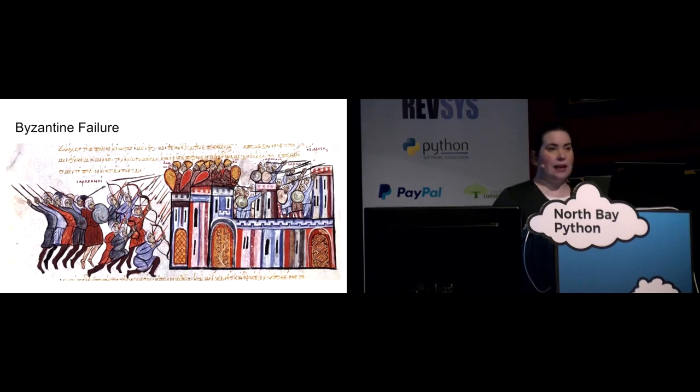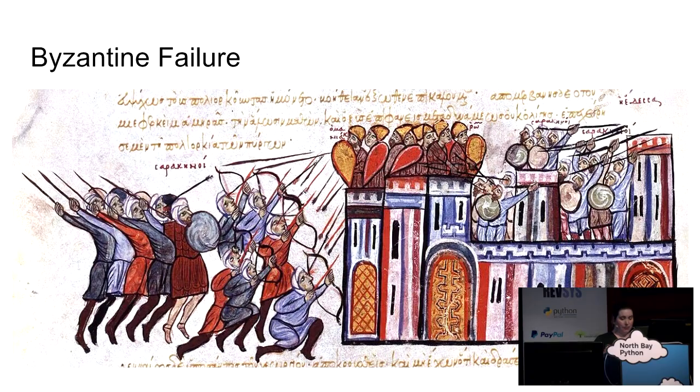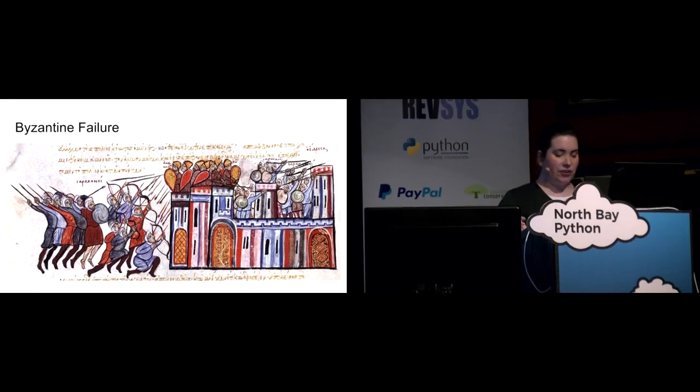Now the Byzantine failure was named for a paper in which nine Byzantine generals are surrounding the city. They can only take the city if they all decide to attack at once. The messengers between them may get lost or captured. And one of these generals is a spy and he's going to try and foil the other generals' plans. He may send an attack vote to four generals planning to attack and a retreat vote to four generals planning to retreat. And in this instance, the traitorous general is the malfunctioning machine in the cluster, which is sending contradictory or conflicting information to the other participants. And it's a difficult problem to mitigate. And RAFT does not officially mitigate Byzantine failures, but it can handle some instances of it.